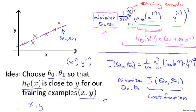So, this cost function is also called the squared error function. Or sometimes called the squared error cost function. And it turns out that the squared error cost function is a reasonable choice and will work well for most problems, for most regression problems. There are other cost functions that will work pretty well.